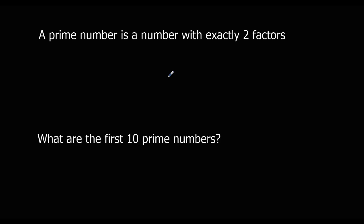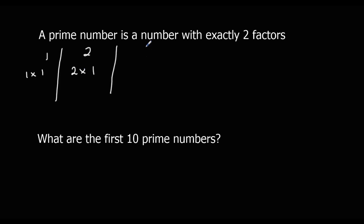A prime number is a number with exactly two factors — two things that multiply together to make it. So 1 is not a prime number because we can only make 1 by doing 1 times 1; it has just one factor. 2 is a prime number: 1 times 2, and no other things multiply together to make 2, so it has exactly two factors. 3 is only 1 times 3, so 3 is also a prime number.